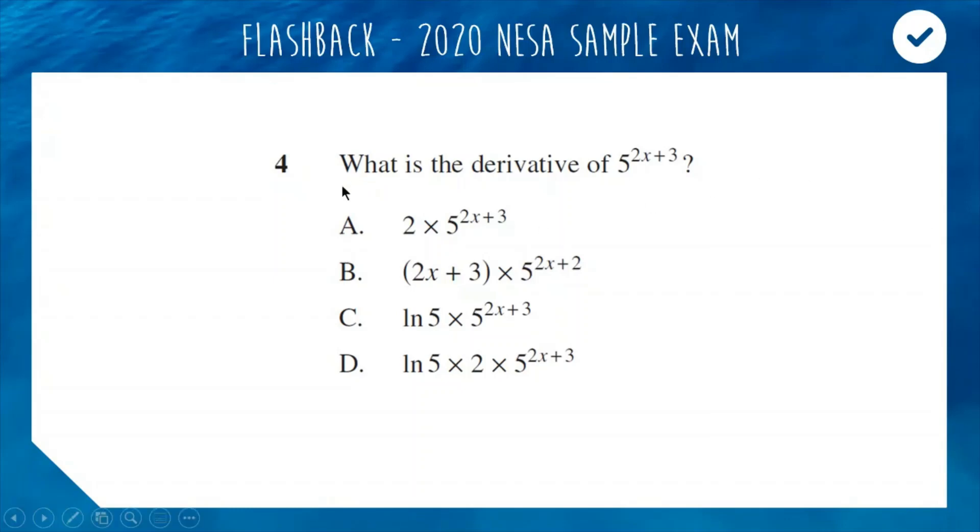Answer number A is keeping the exponential term as is and then multiplying by 2 because 2 is the derivative of the function in the exponent. This would be the correct answer if our base was e, but our base is not e, our base is 5.